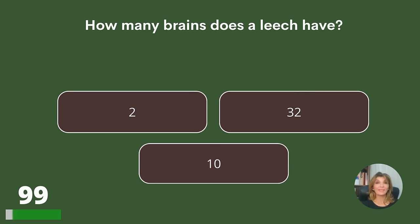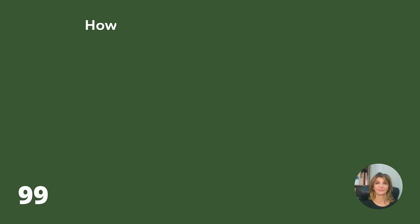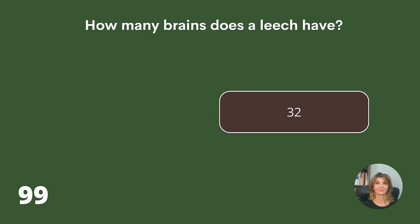How many brains does a leech have? 2, 32, or 10? Answer: 32.